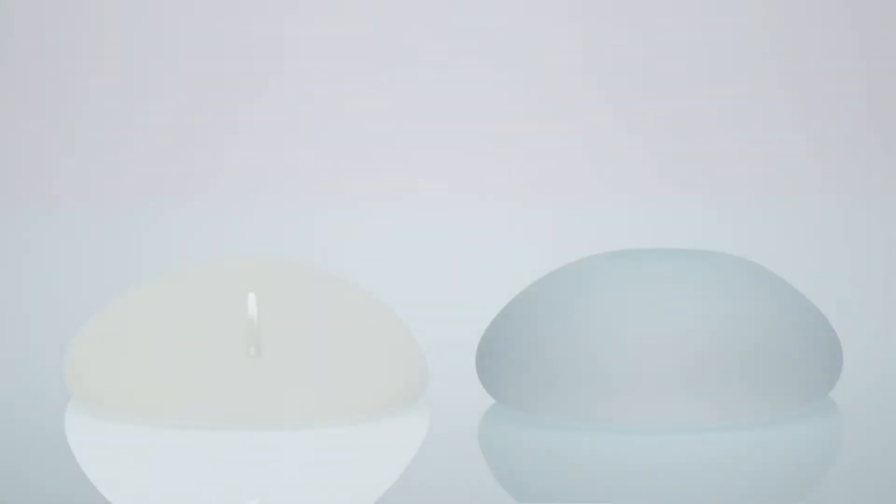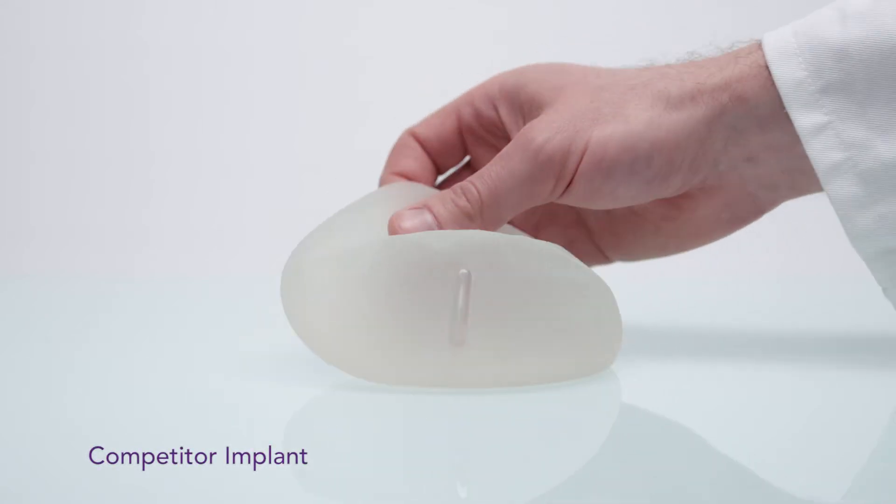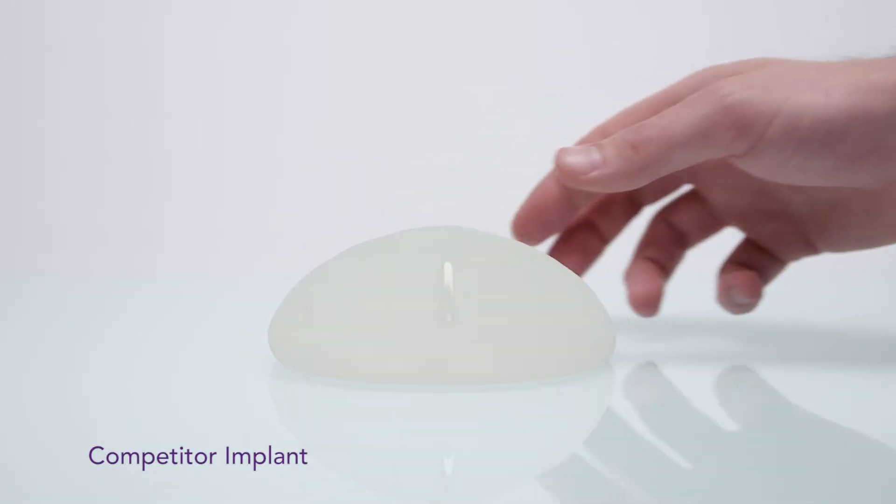An important aspect that is often overlooked when choosing implants is the surface. Some clinical data suggests that the surface texture of a breast implant can affect the risk of breast enhancement complications. Implants with a rough texture may lead to complications due to tissue irritation and inflammation.